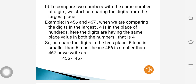To compare two numbers with the same number of digits, we start comparing the digits from the largest place. For example, in 456 and 467, 4 is in the hundreds place in both numbers — the digits have the same place value. So we compare the digits in the tens place: 5 tens is smaller than 6 tens. Hence 456 is smaller than 467, written symbolically as 456 is less than 467.